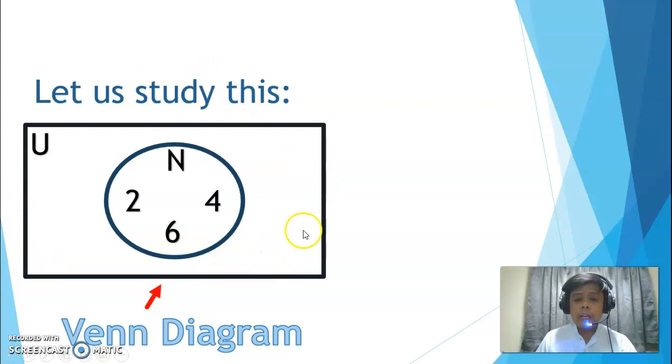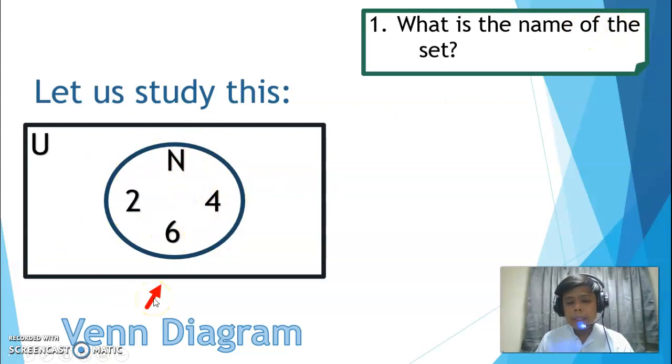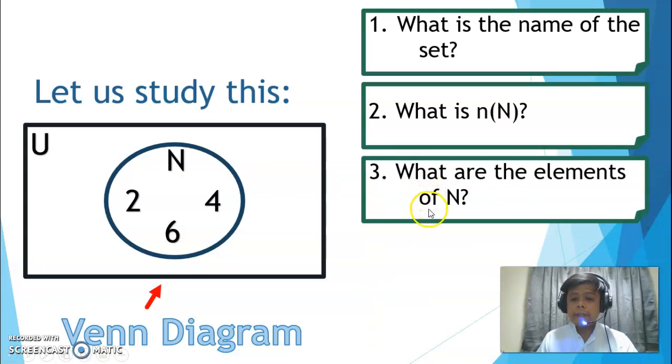So let's study this one. This is called a Venn diagram. We use Venn diagrams to show the relationship between or among sets. It uses geometric shapes. Okay, so this rectangular figure represents our universal set. This is all we'll discuss, what's inside. So how many sets are there? One. Just this, the blue one. So what is the name of the set? What capital letter is at the top? Letter N. So this is set N. Number 2, this is the cardinality. What is the cardinality of set N? How many elements are there? Three. We have 2, 4, and 6. Next, number 3. What are the elements of set N? The elements or members of set N are 2, 4, and 6.